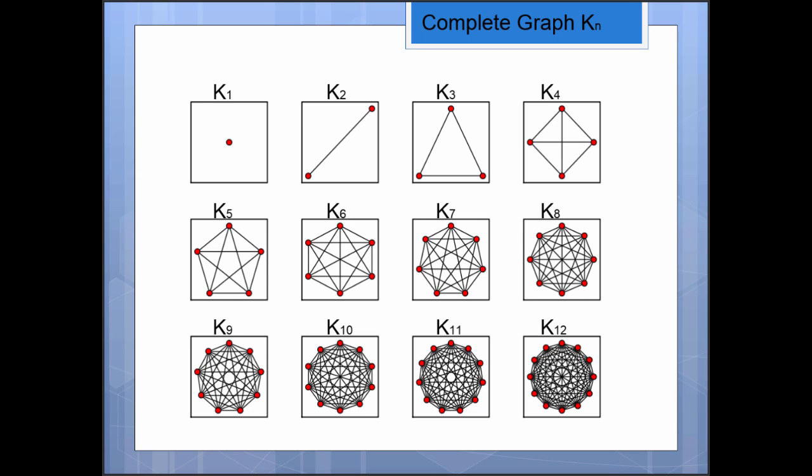There are no other vertices for which to make an edge. K2 is just a line between two vertices. K3 is the triangle. And in fact, K3 is what we were looking at when we were playing Rock, Paper, Scissors. So if you've ever played Rock, Paper, Scissors before, you've actually played with a little complete graph.